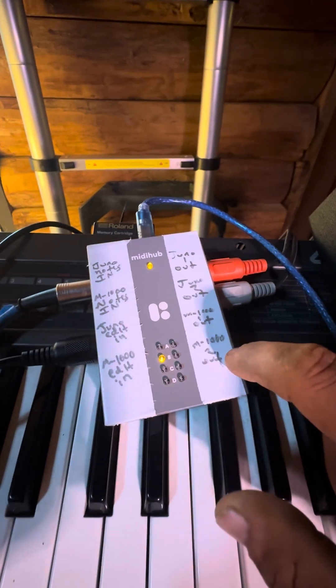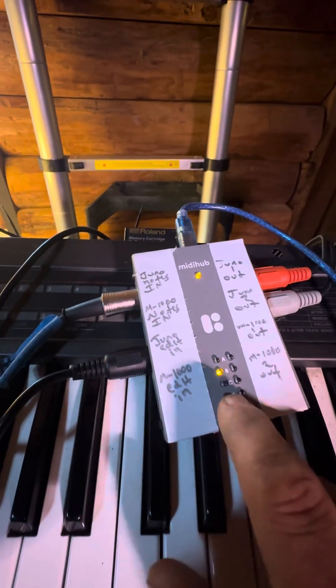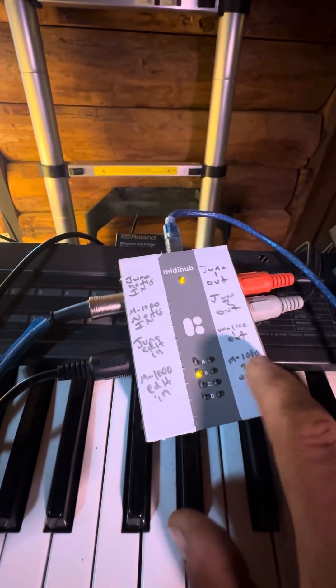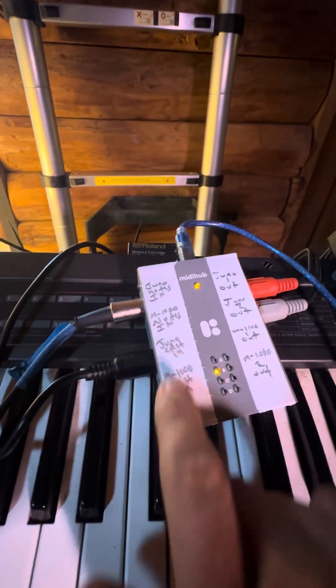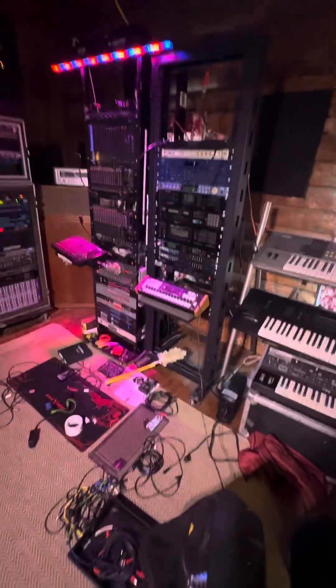Matrix 1000 out, Matrix 1000 out 2. And then the editor will also go to C and D. So I can do the same exact thing to make a 12 voice Matrix 1000.